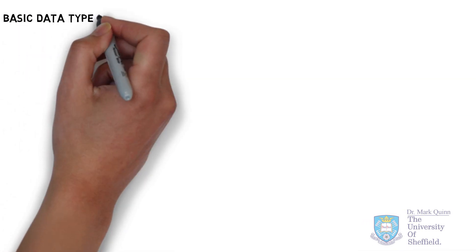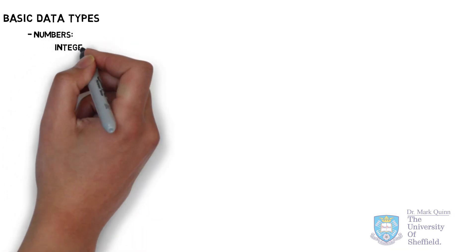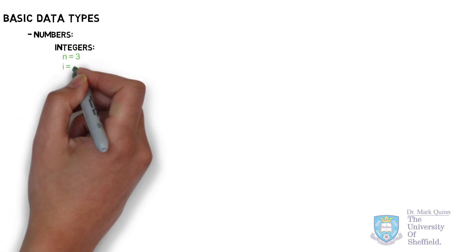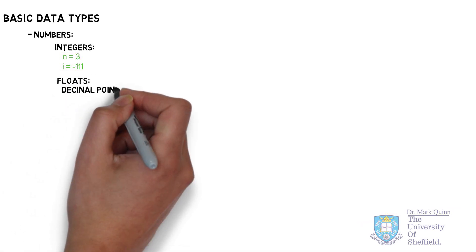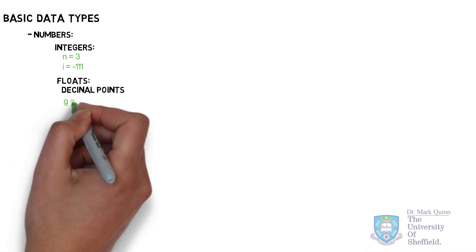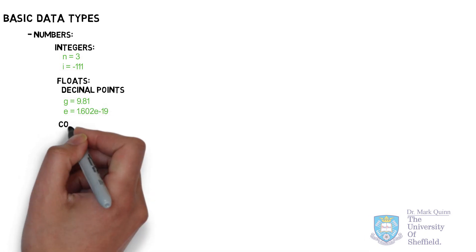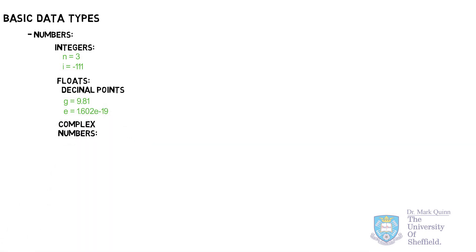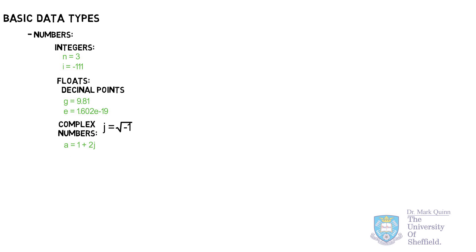When we program, the information we provide to the computer is referred to as data. The first of our basic data types are numbers, including integers, for example 3 or minus 111. Real numbers, or decimal numbers, which have a floating decimal point, are called floats, such as 9.81. Complex numbers are also catered for, and here j is assigned to be the square root of minus 1, which is an imaginary number.